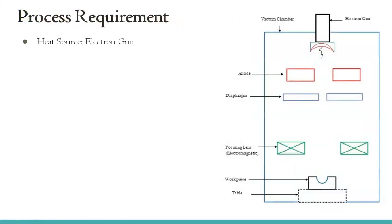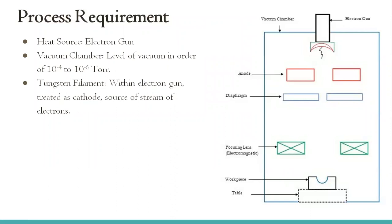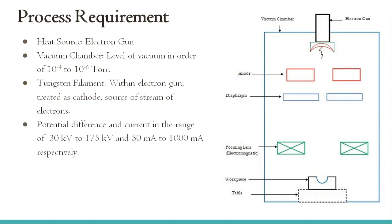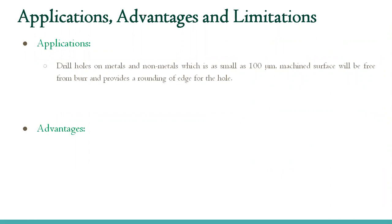The process parameters or process requirements are: the heat source is the electrons, generated by the electron gun; a vacuum chamber is required and the vacuum level is maintained in the order of 10 to the power minus 4 to 10 to the power minus 6 torr; a tungsten filament is used; the electron gun, grid cap, and filament are part of the cathode; the potential difference is 30 kV to 175 kV and current is 50 to 1000 milliamps; and the electrons travel in the range of 50,000 to 200,000 kilometers per second.